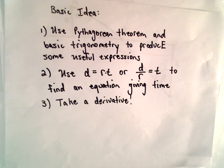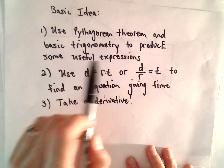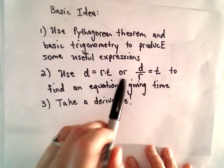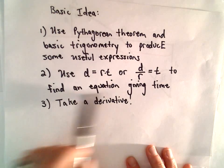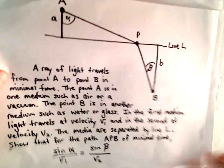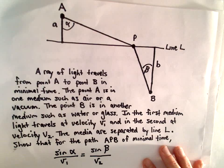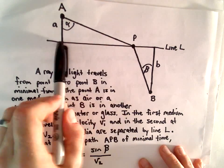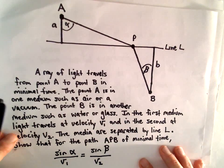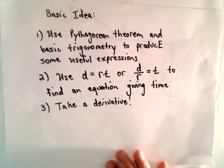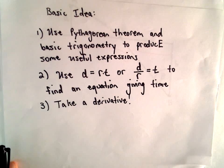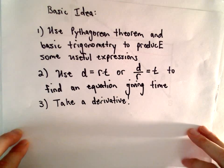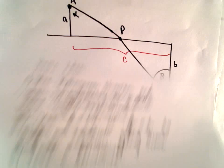The basic idea: I'm going to use the Pythagorean theorem and some basic trigonometry to produce useful expressions. We'll use the fact that distance equals rate times time, or equivalently, distance divided by rate equals time. That gives us an equation involving time, and we'll make it depend only on a single variable — the horizontal distance from point A to point P. That gives us an equation in one variable, and then we just do the calculus: take a derivative, set it equal to zero. I won't justify that it's a minimum — I'll let you do that. We'll get sine of alpha over v₁ equals sine of beta over v₂.